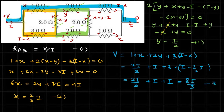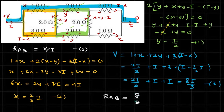So V = 8i/3. From the zeroth equation, R_AB = V/I, so R_AB = 8/3. The equivalent resistance between A and B is 8/3 Ω. That is our answer. Thank you!